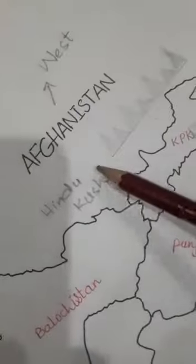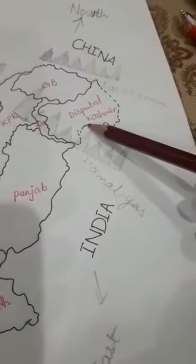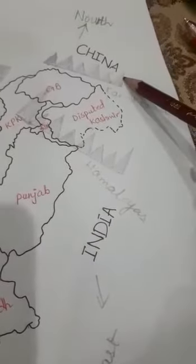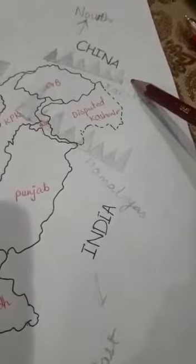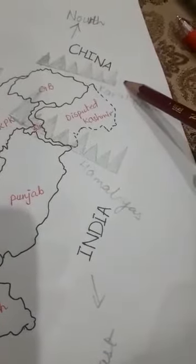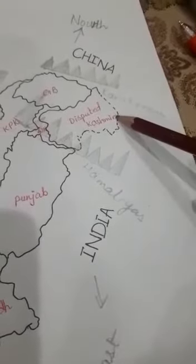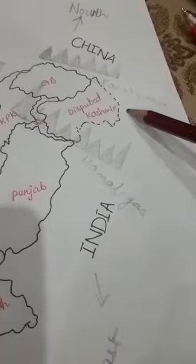There are three categories of mountain regions in Pakistan: number one, Karakoram; number two, Himalayas; number three, Hindu Kush. Karakoram is the mountain range between China and Pakistan, and its highest peak is K2. K2 is Pakistan's highest peak and is also known as the second highest peak of the world.